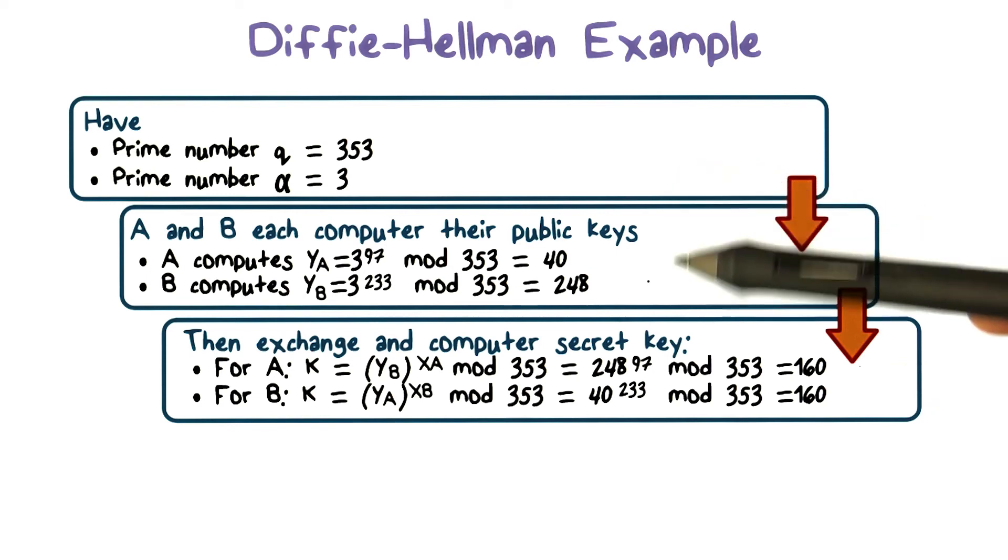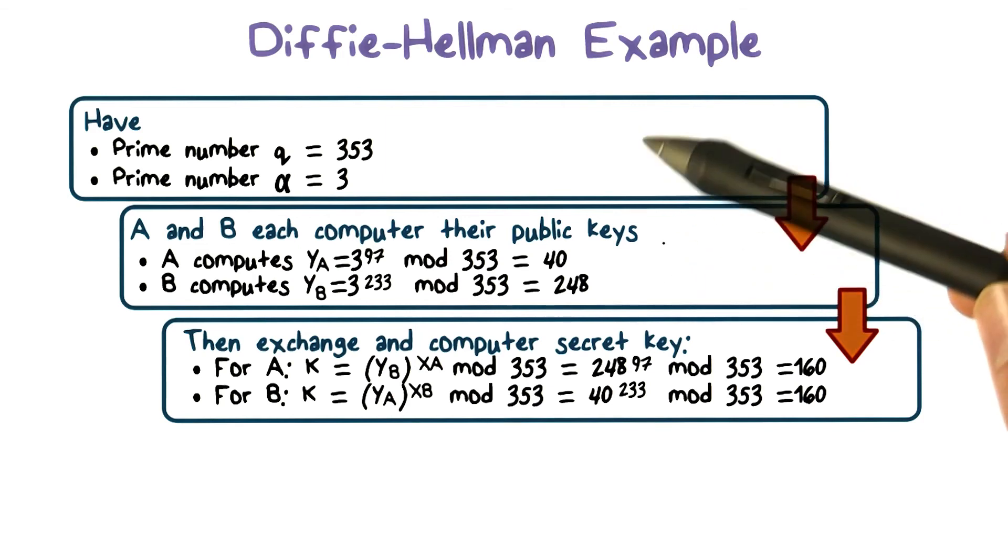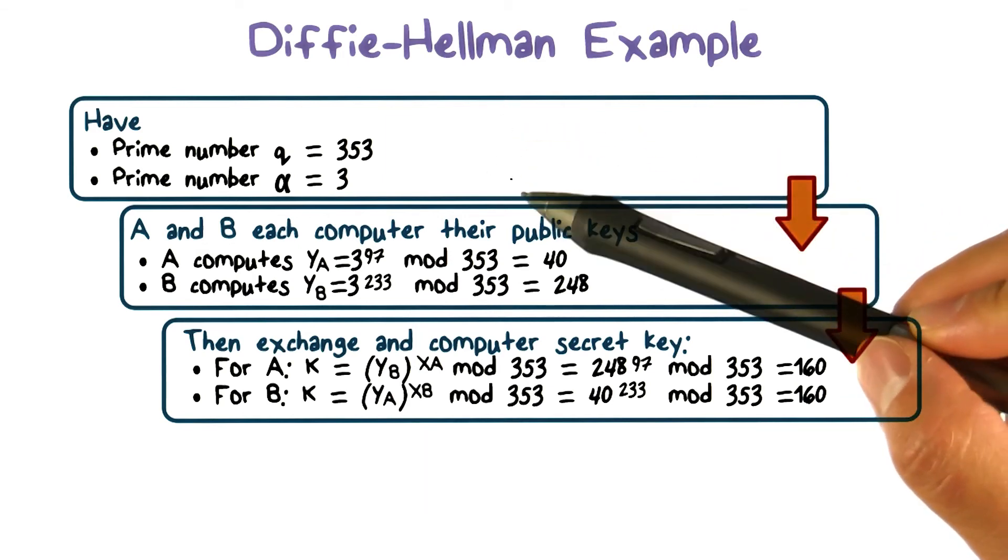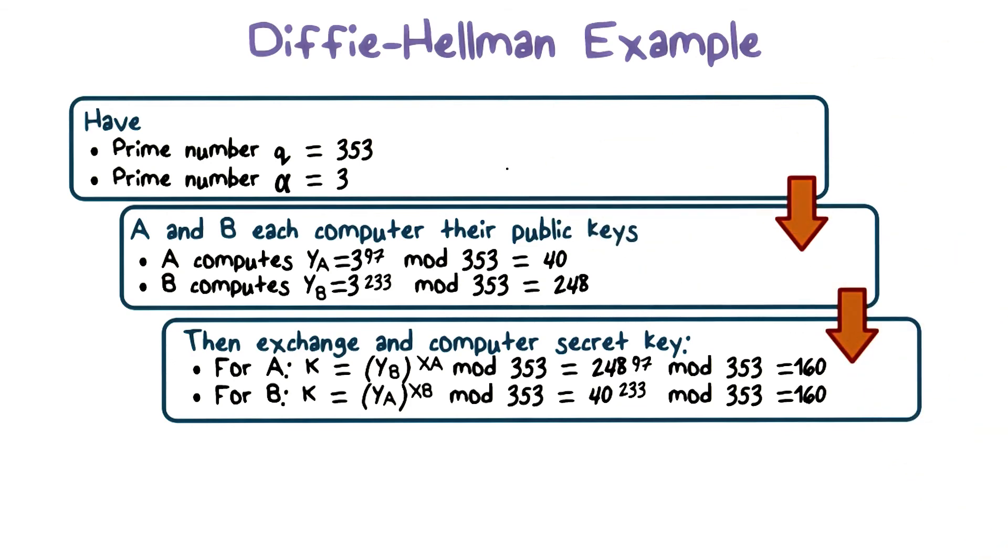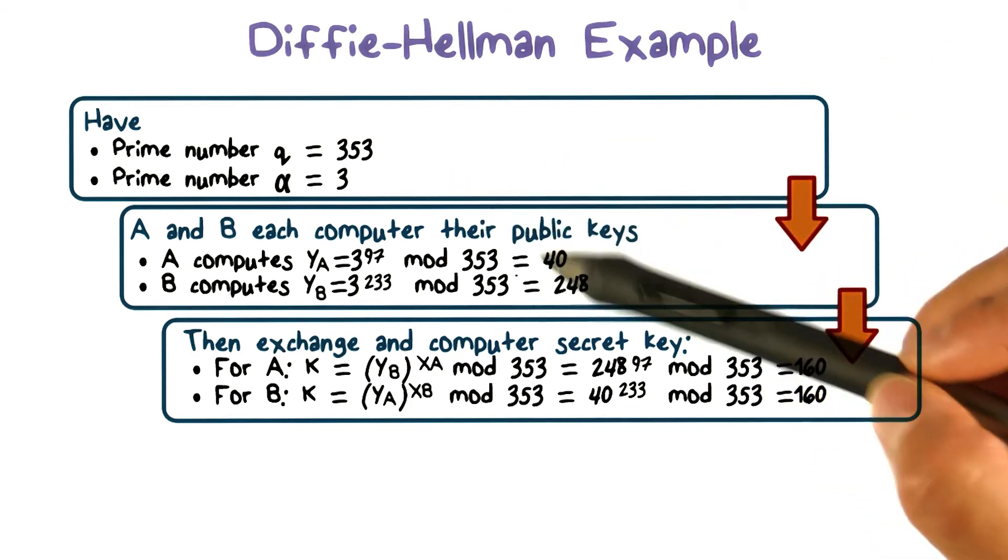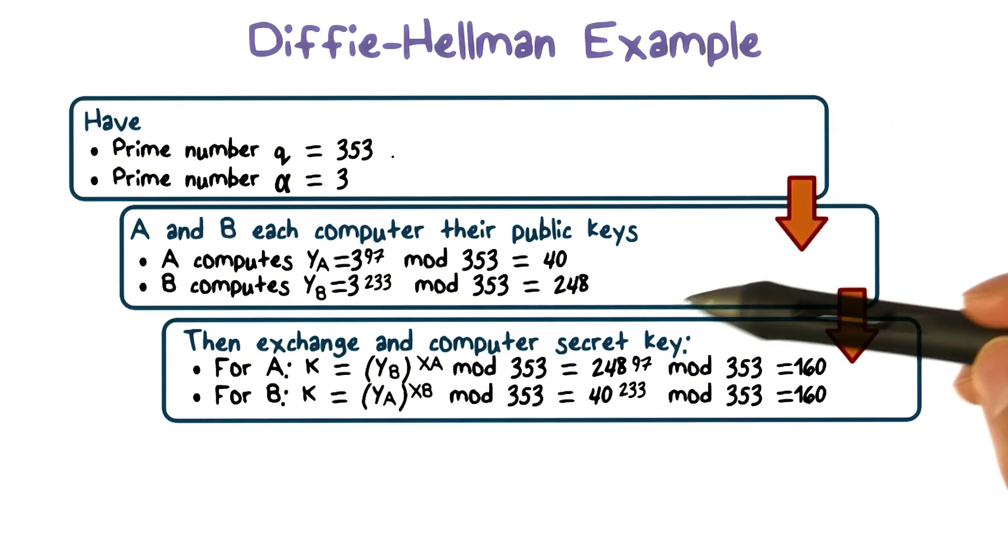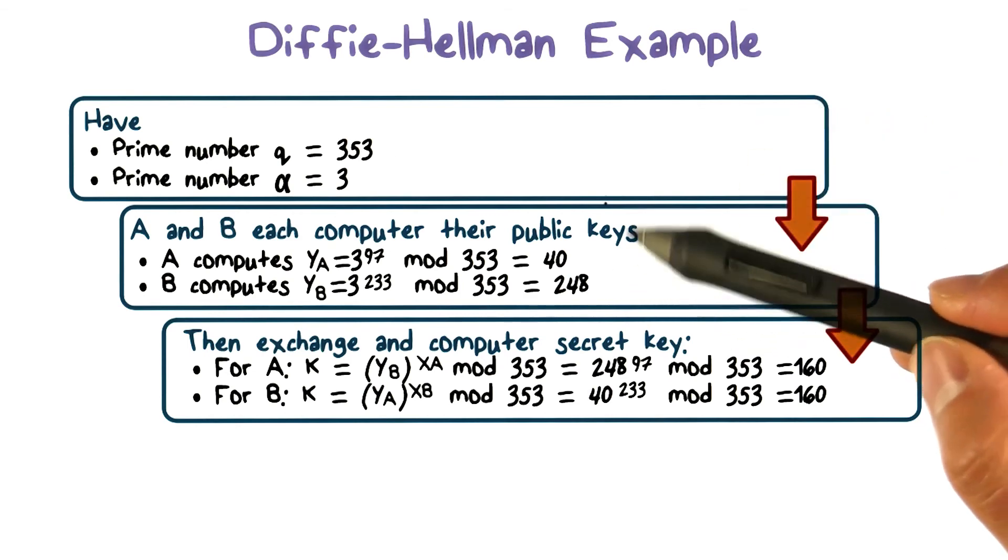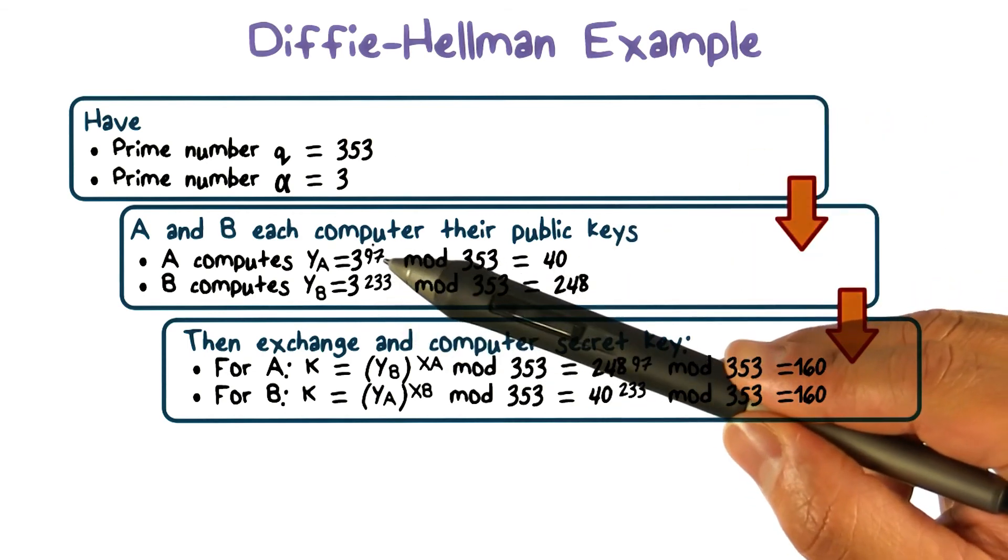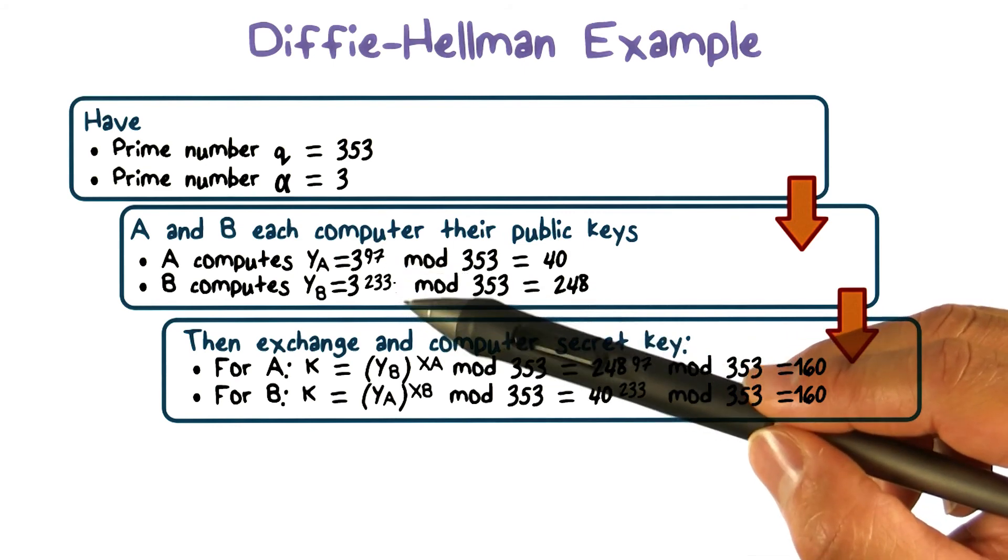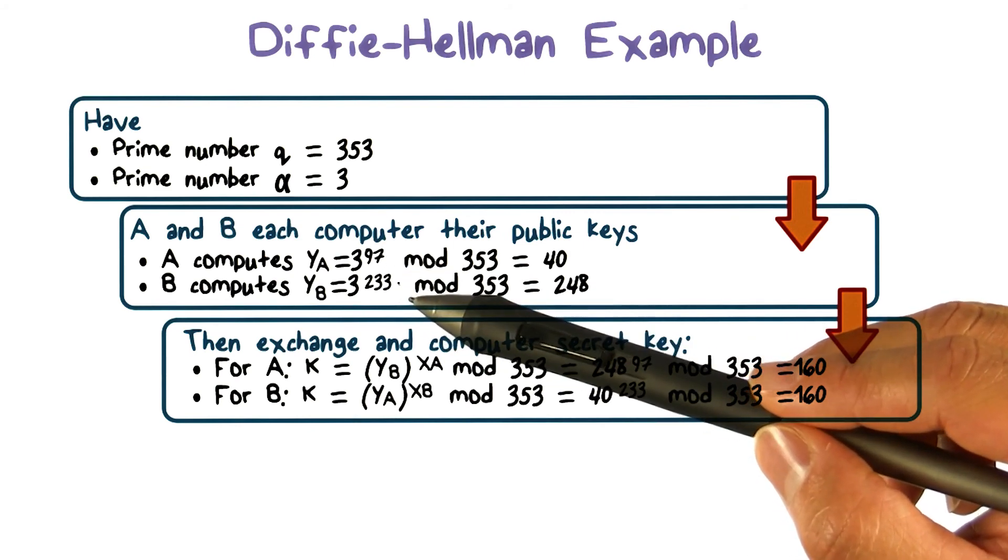We assume that an attacker would be able to obtain these publicly exchanged values, which we call them public keys. And they also know the publicly known numbers q and alpha. In this case, because the integers involved are very small, it is feasible that the attacker would be able to figure out the secret values xA and xB, which is 97 and 233.